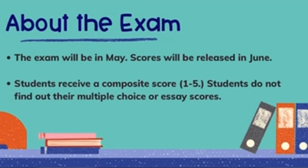AP readers will score the essays in June, and then students get their scores back in July. Just like with other AP classes, you get a composite score — a number between one and five. Unfortunately, the breakdown of multiple choice or individual essay scores is not provided; you just find out your overall exam score. Generally speaking, a three out of five composite is considered a qualifying score, so that's what many students aim for.